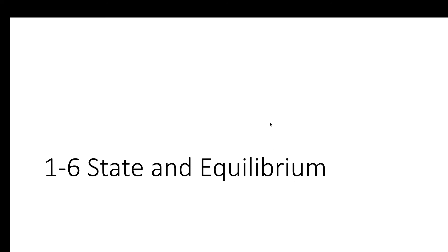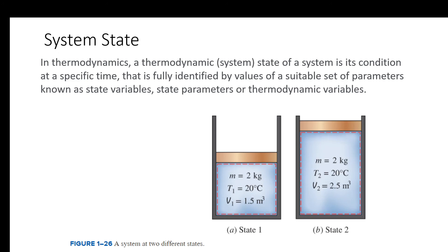The next section deals with state and equilibrium. System state refers to the properties or characteristics that define our system. Let's say we start off in a certain state and follow some path through a process to go from one state to another. For example, we might have a certain mass, temperature, and volume initially, and then at a later state the mass and temperature remain the same but we have an increase in volume.